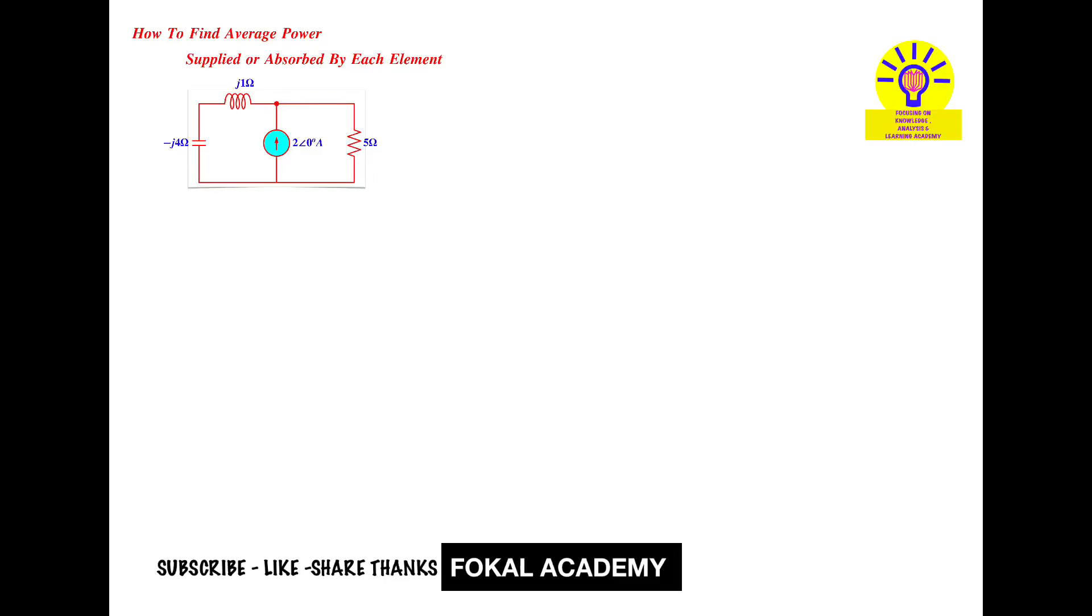Hi everyone, welcome to Focal Academy. See this problem on how to find average power supplied or absorbed by each element. Here the source is a 2 ampere current source with phase angle zero, connected to two parallel branches. In one branch there is a capacitor and inductor having impedances minus J4 ohms and J1 ohms respectively.